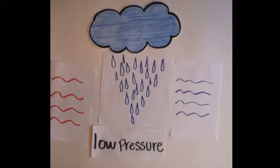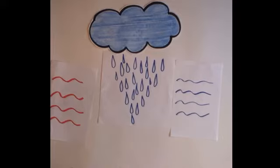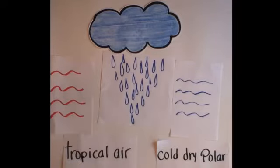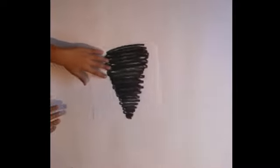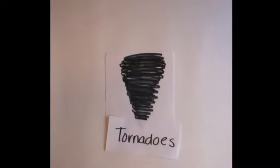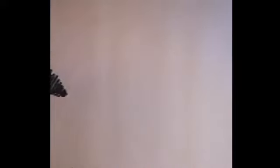The air in the funnel spins faster and faster and creates a very low pressure area which sucks more air and possible objects into it. The severe thunderstorms which produce tornadoes form where cold, dry polar air meets warm, moist tropical air. This is most common in a section of the United States called Tornado Alley. Also, the atmosphere needs to be very unstable.